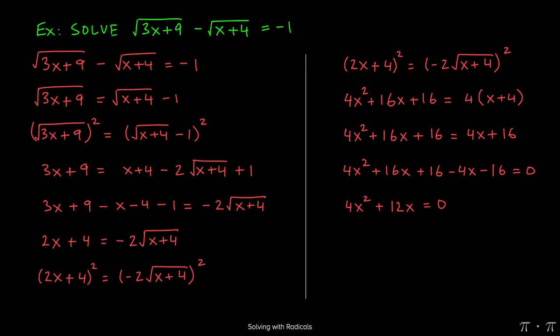The 4x squared is by itself, so it stays there. 16x minus 4x gives us 12x, and 16 minus 16 gives us zero.